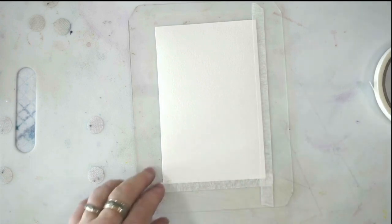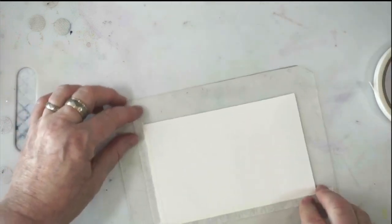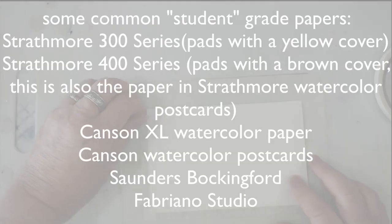The next thing that could be causing your paper to tear is if you're using student grade paper. Student grade paper is just a lot softer, so by student grade I mean wood pulp paper. Any paper that doesn't advertise itself as 100% cotton is probably wood pulp paper, because otherwise they tell you it's 100% cotton so they can charge you for it.